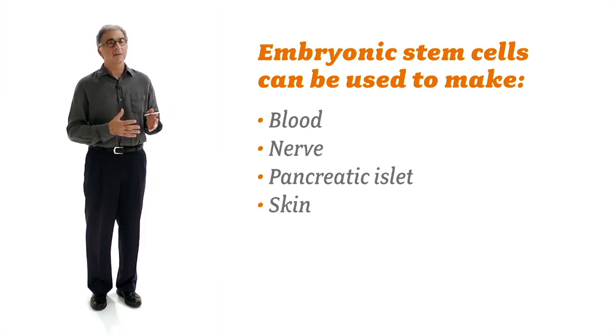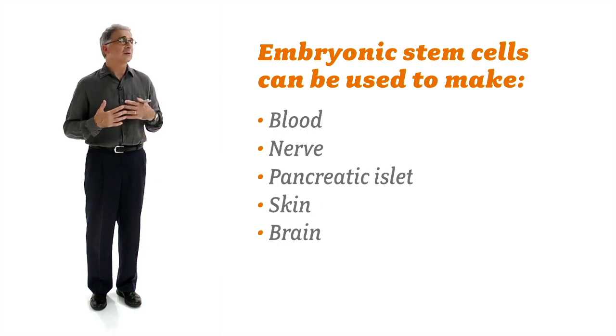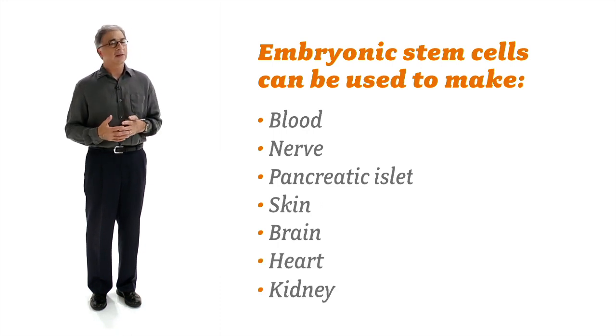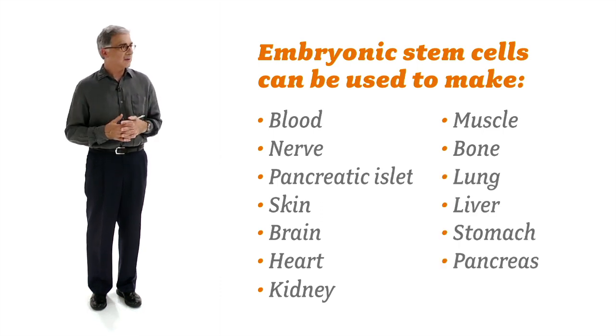It can make all of the skin, brain, and nerve, what's called the ectoderm of a body, the outside of our body. It can make all of the tissues on the inside, the mesoderm, which includes blood, heart, kidney, muscle, and bone. And it can make the gut tube, the endoderm, the lung, the liver, the stomach, the pancreas, the intestine.